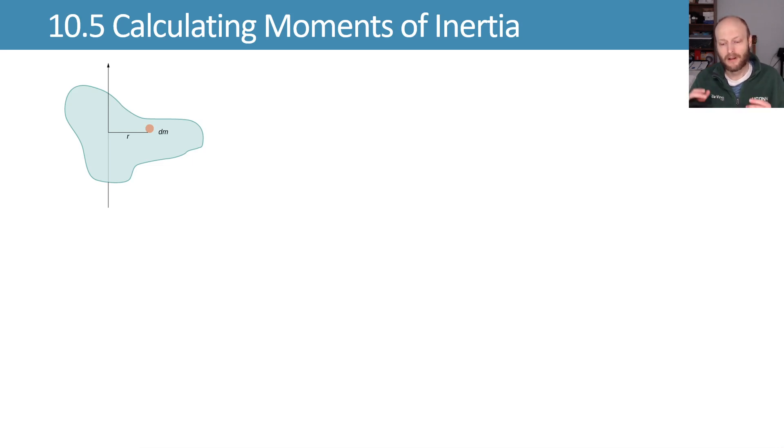We already know how to find moments of inertia for point masses. We multiply the mass by the distance away from our axis of rotation, squared, and we add up all those point masses. What about if we have a continuous distribution of mass?